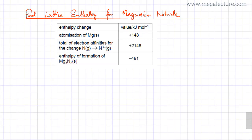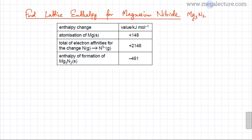In this practice question, you are asked to find the lattice enthalpy of magnesium nitride. Magnesium nitride has Mg²⁺ and N³⁻, so its formula is Mg₃N₂.